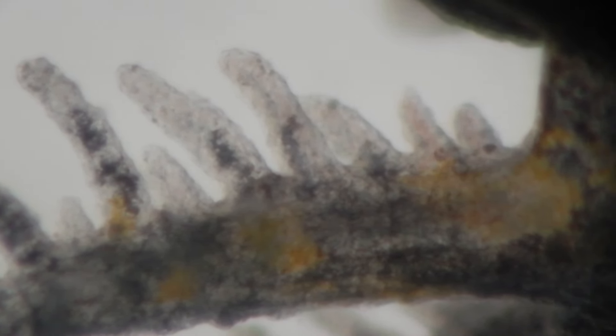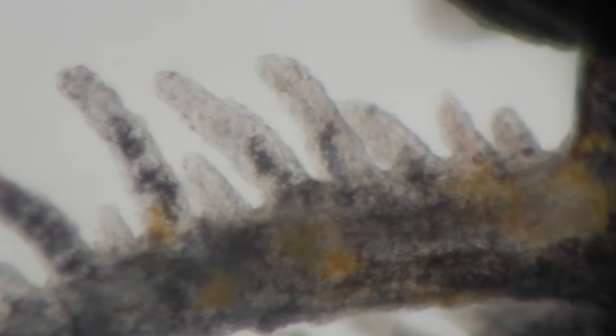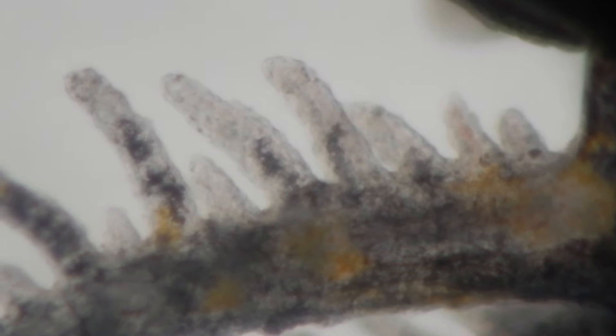These external gills may possess muscles which allow them to move, which can be an advantage in stagnant water, and you can observe the very rich blood flow to these external gills.